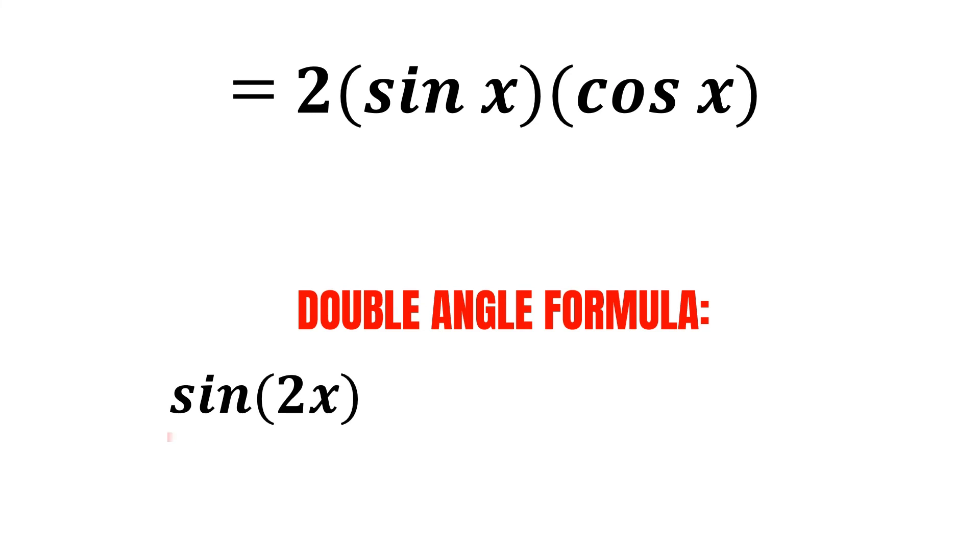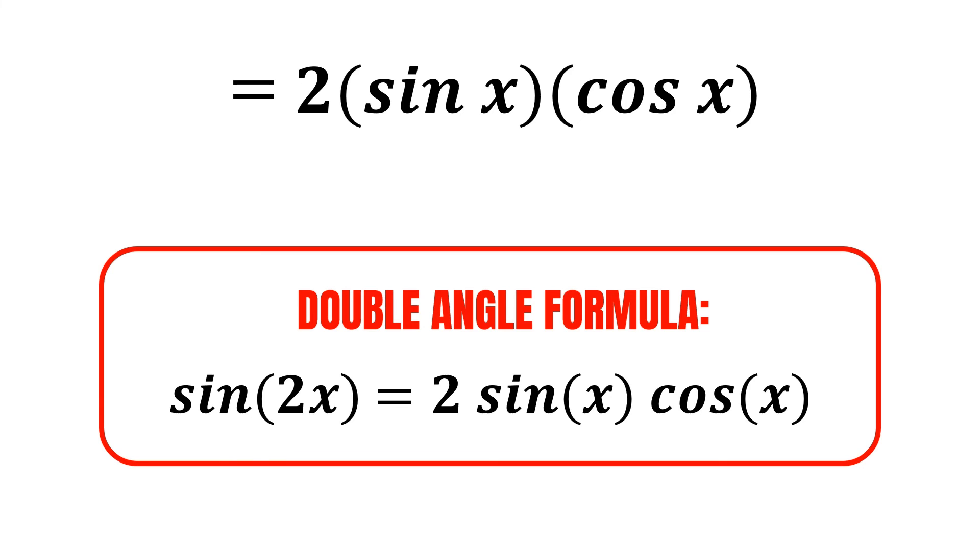For instance, if we are given sine of 2x, it is equal to 2 multiplied by sine x, and multiplied by cosine x. And now, you might notice that this is actually the same as our original expression, so it is simply equivalent to sine 2x.